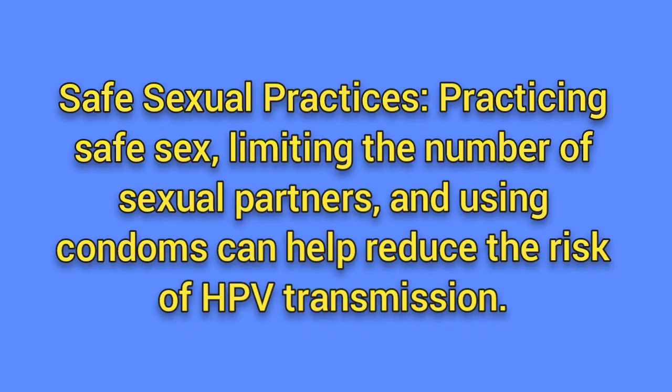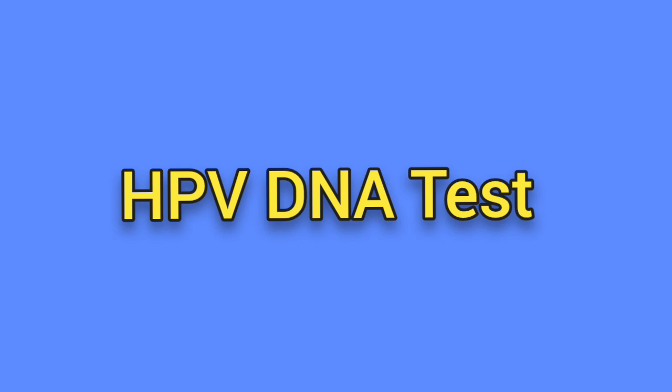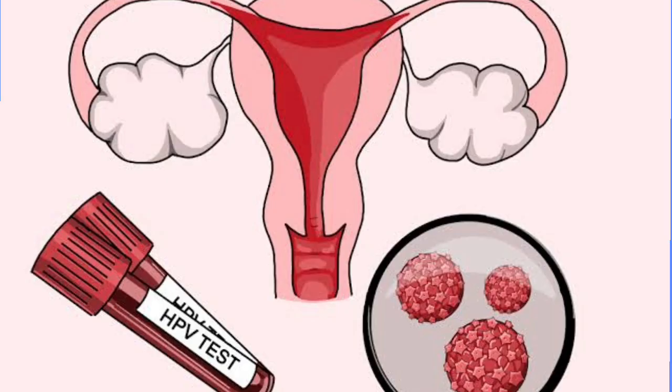Practicing safe sex, limiting the number of sexual partners, and using condoms can help reduce the risk of HPV transmission. For early detection, a Pap smear involves collecting cells from the cervix to detect any abnormal changes that may indicate the presence of precancerous or cancerous cells. The HPV DNA test identifies the presence of high-risk HPV strains in cervical cells, helping to identify women at risk of developing cervical cancer.